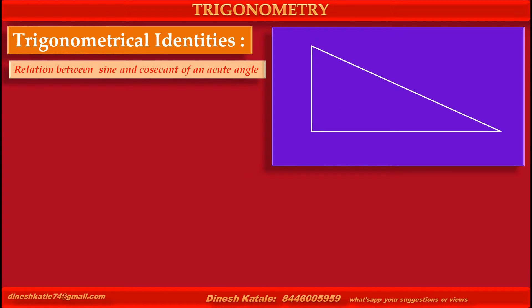Consider a right-angled triangle having vertices O, Q, P, where Q is right angle. Theta is an acute angle at point O.